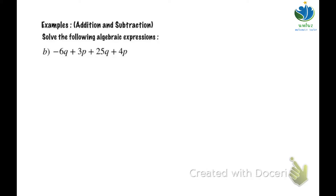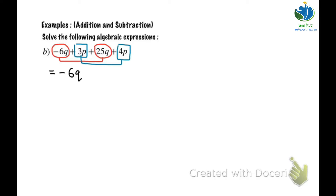Example B. First step, arrange the like terms. So now negative 6q and 25q. Second, 3p and 4p. Okay, we arrange the like terms. So negative 6q plus 25q, continue with plus 3p plus 4p. Okay, arrange the like terms.